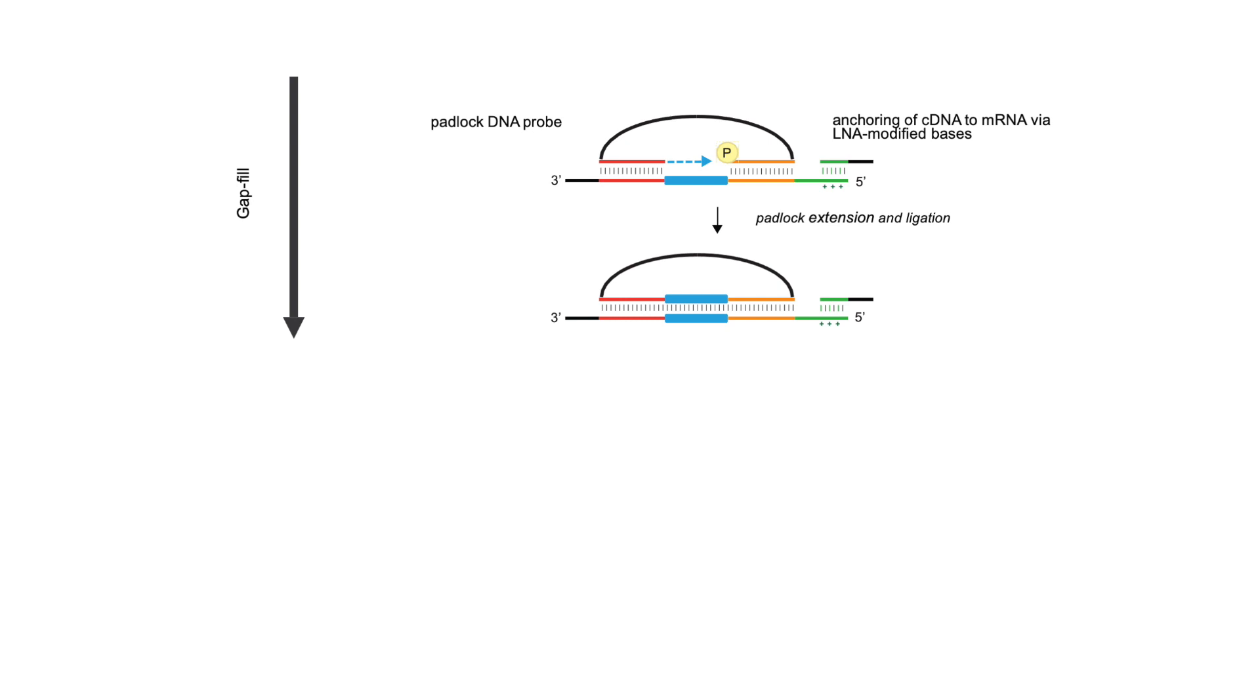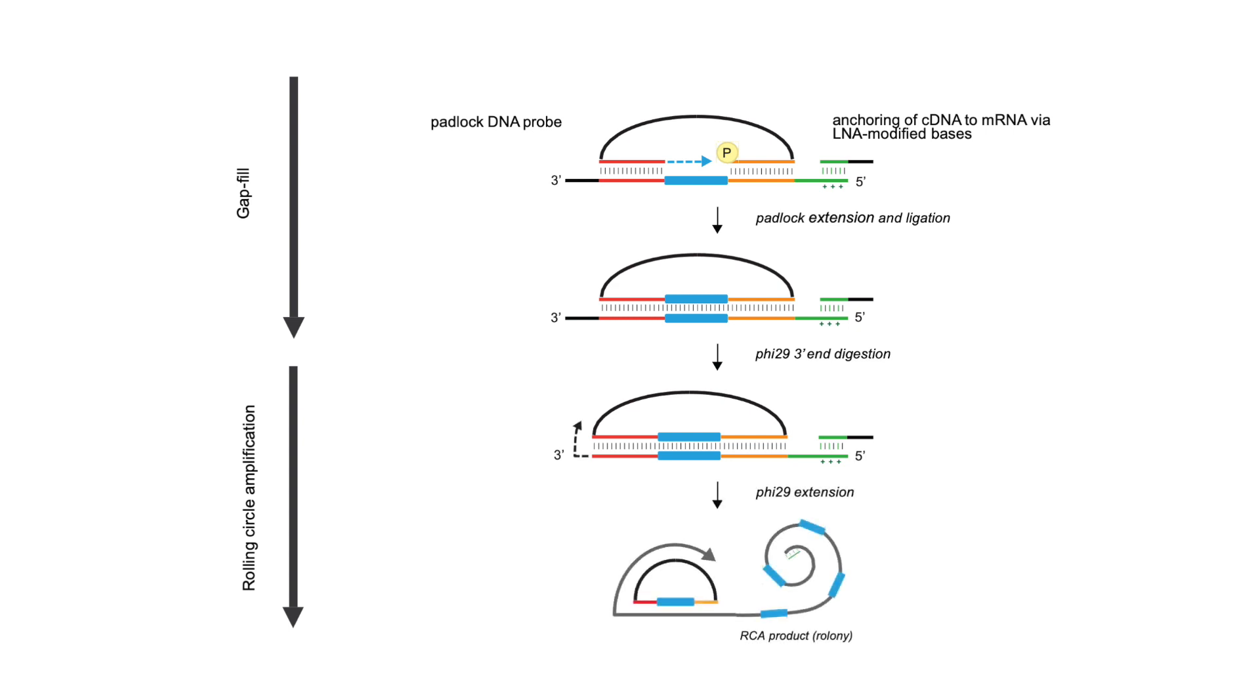This circular molecule can then serve as a template for rolling circle amplification, or RCA, where the 3' to 5' exonuclease activity of phi-29 DNA polymerase first chews back the cDNA until it can access the padlock template and extend the cDNA. It then copies the padlock multiple times over into a long linear RCA amplicon with many repeats of the perturbation information.